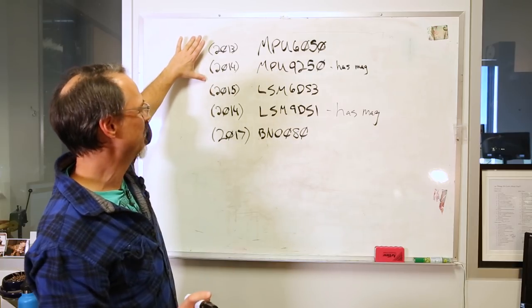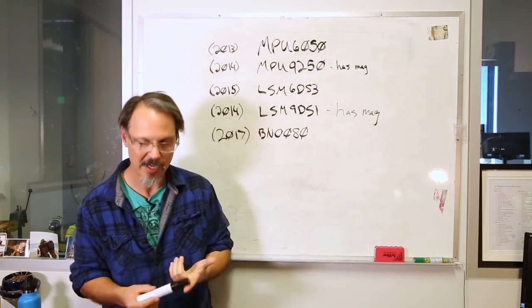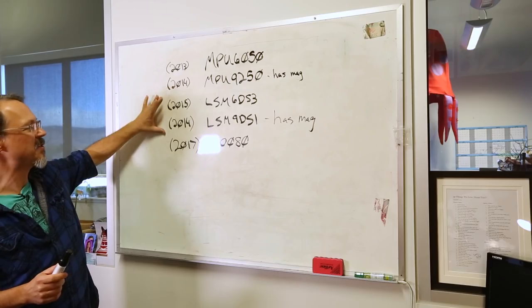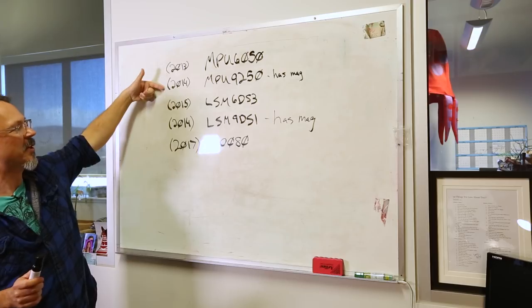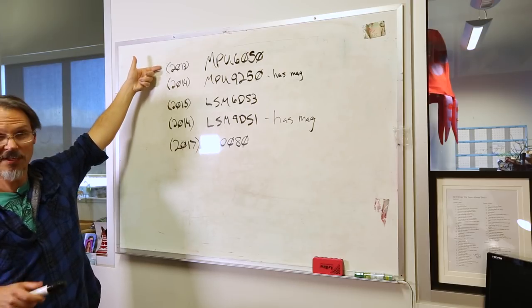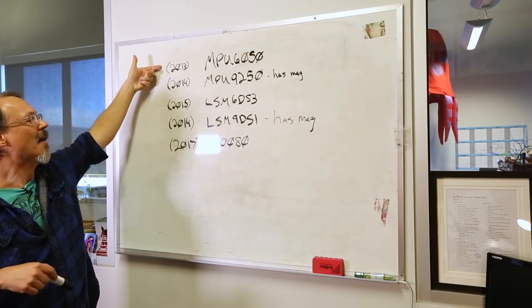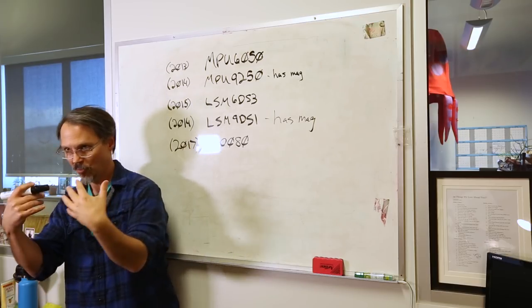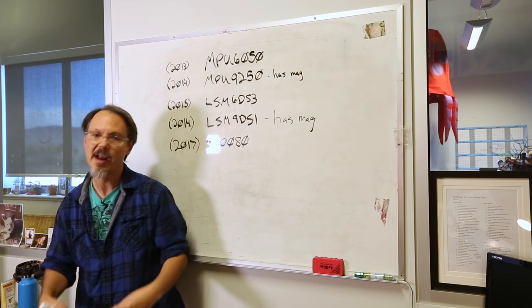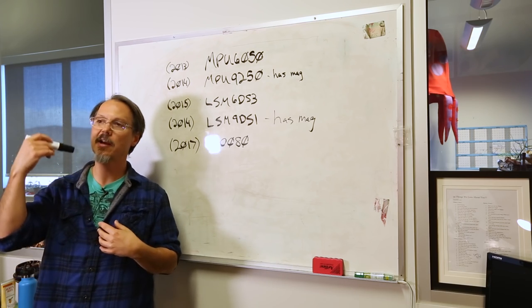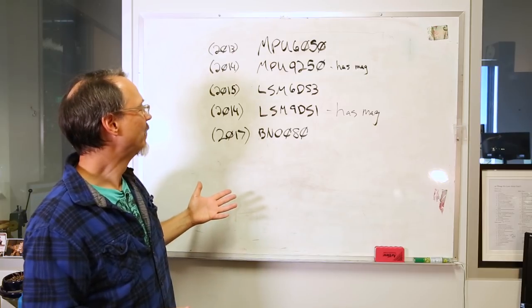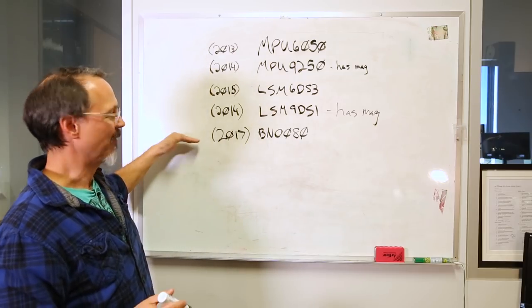The specs between these two are very similar. The ranges are very similar. The noise figures of the ST, as I recall, are closer to the 9250 than the 6050. But the idea behind these guys is you get raw data, you take the raw data into your micro whatever, and you process it, and you analyze it, and you make decisions. But it's a very different approach from this guy, the new guy.